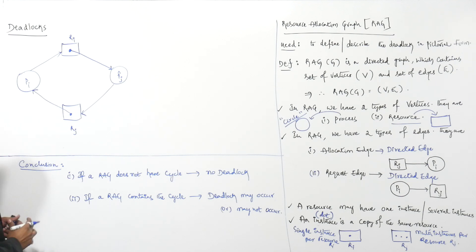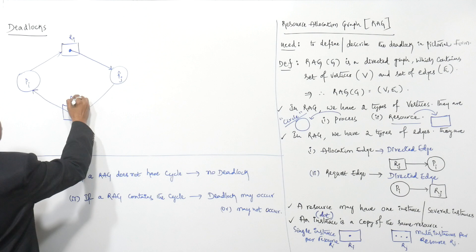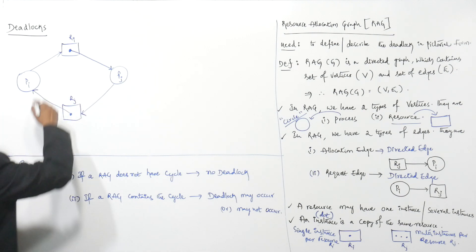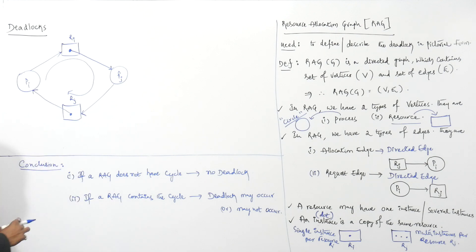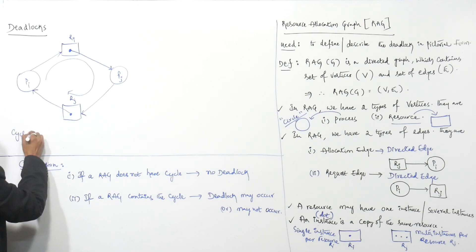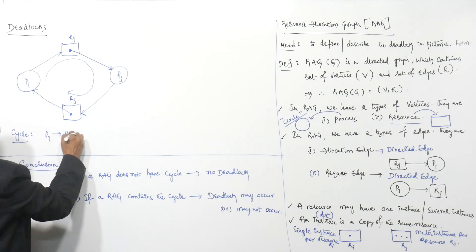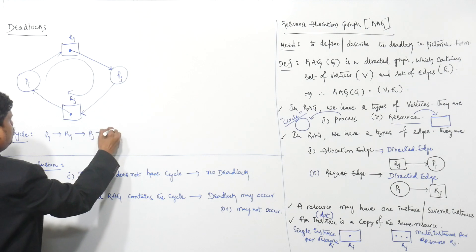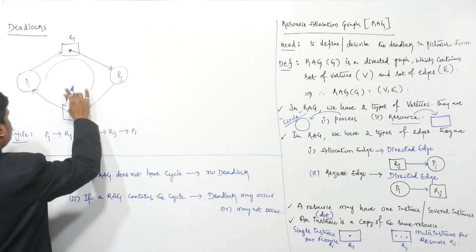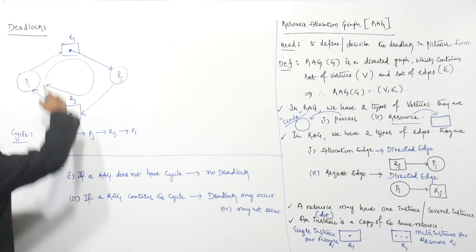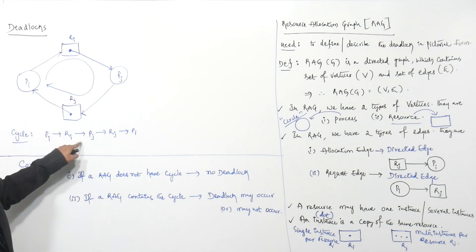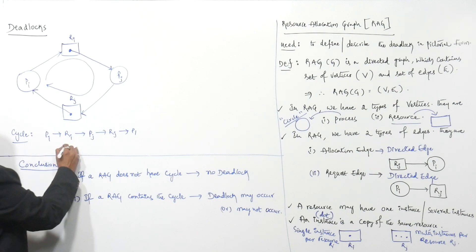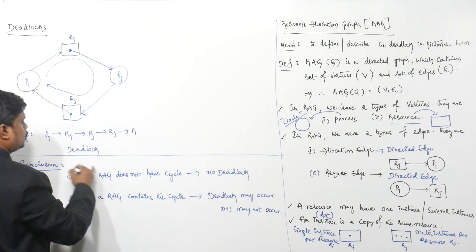And process pj is requesting resource rj. So what happens here? I have a cycle: pi to ri, ri to pj, pj to rj, and then back to pi. So I have a cycle here. When there is a cycle, deadlock may or may not occur. In this case, I have a cycle and we do have a deadlock. Deadlock is present here.